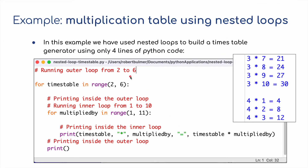Now I'm going to run a timetable program. I'll show you this in Python. I'm going to run an outer loop from 2 to 6 — so `for timetable in range(2, 6)` — and then inside the outer loop, run an inner loop from 1 to 10: `for multiplied_by in range(1, 11)`. Remember, it always stops one before the end value.